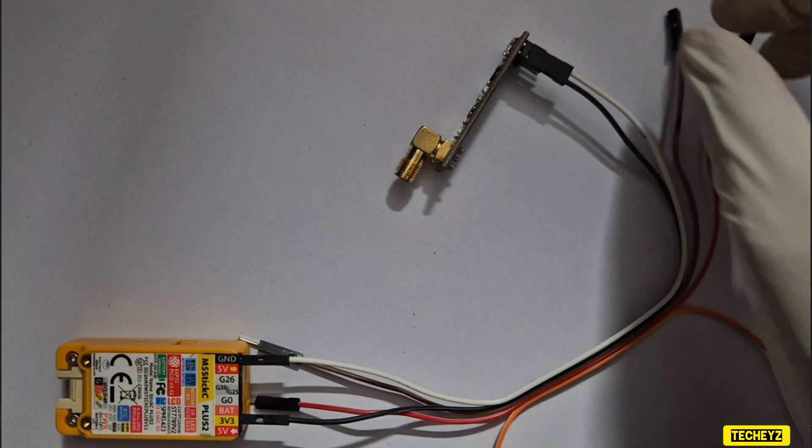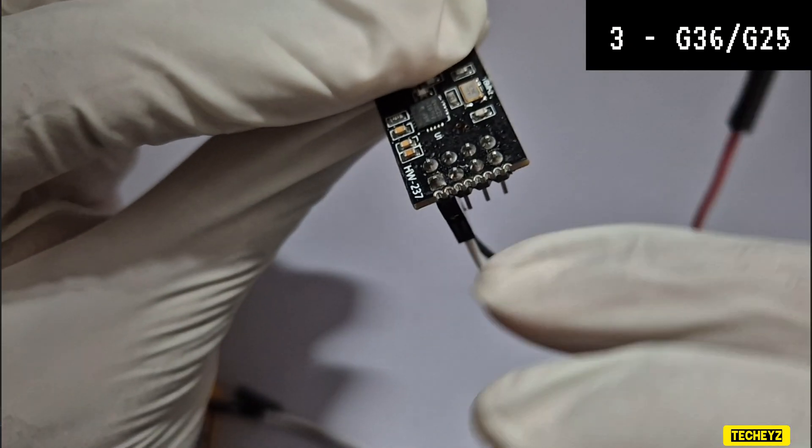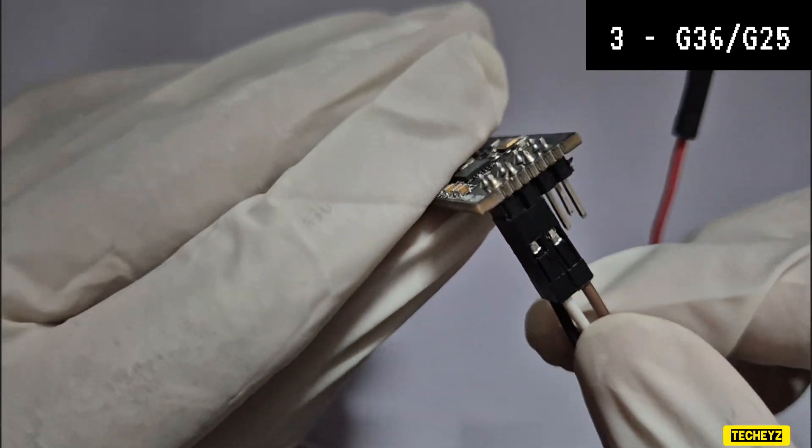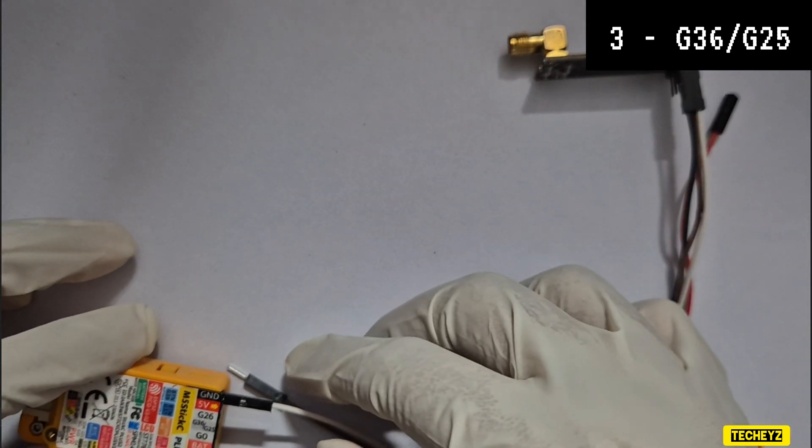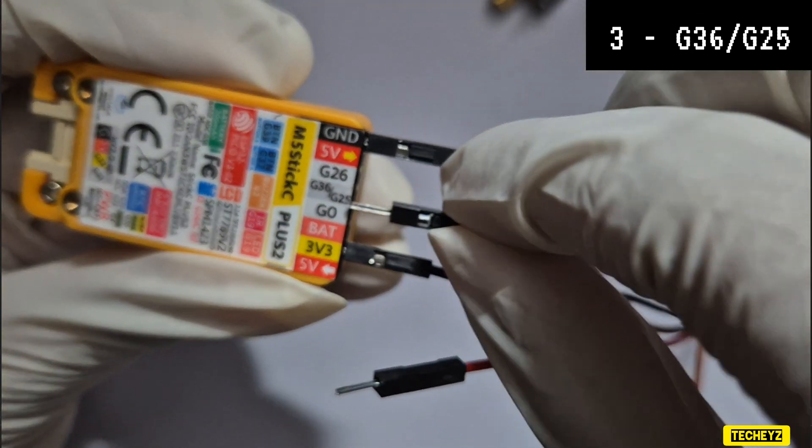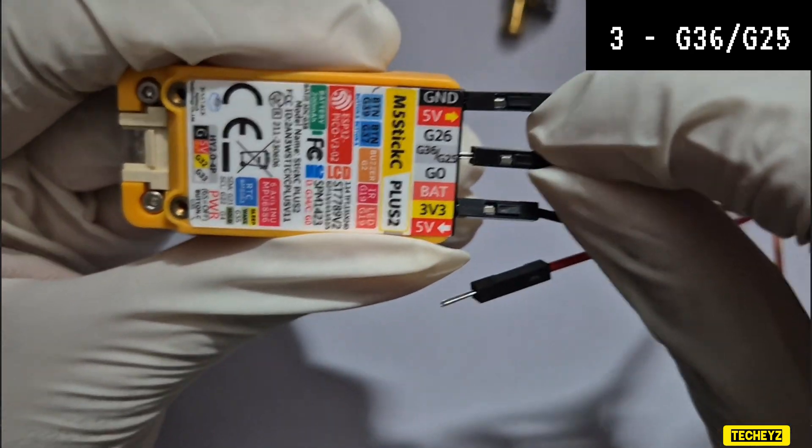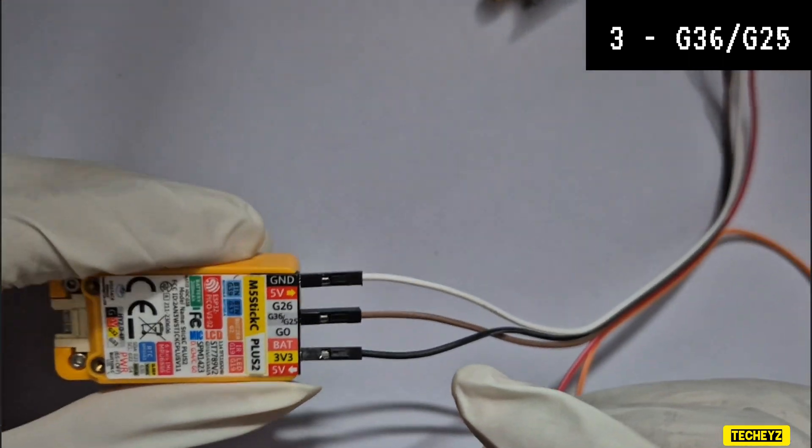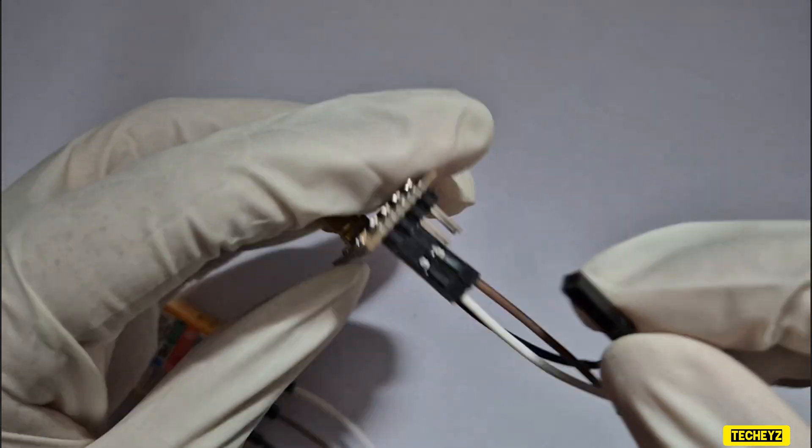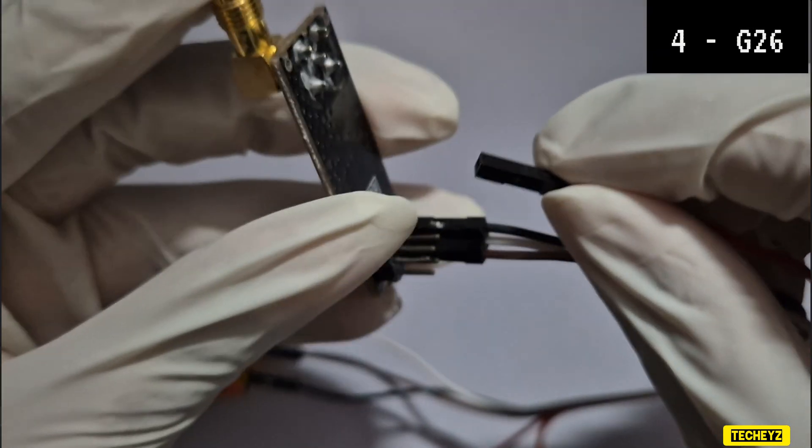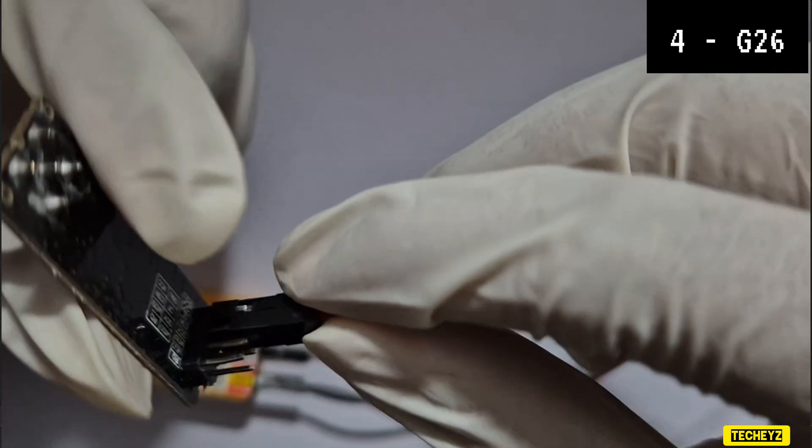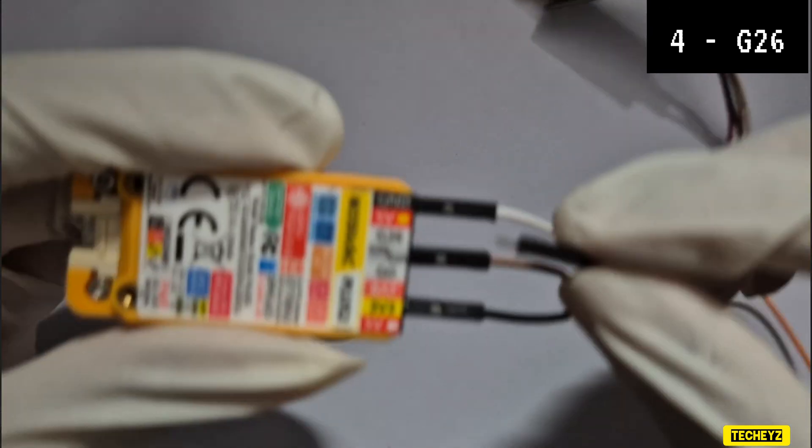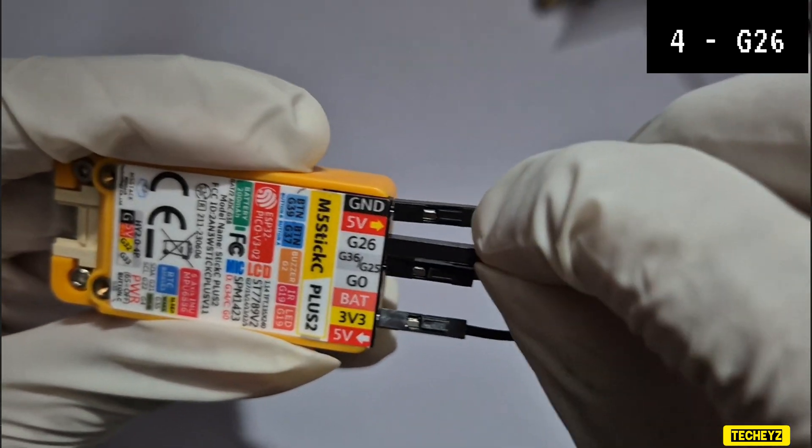Now the third pin which I will be using, I will be connecting it to the third pin besides the white wire and that will be going to G25. Now I will take the fourth wire, I will connect to the fourth pin, and that will be going to G26.